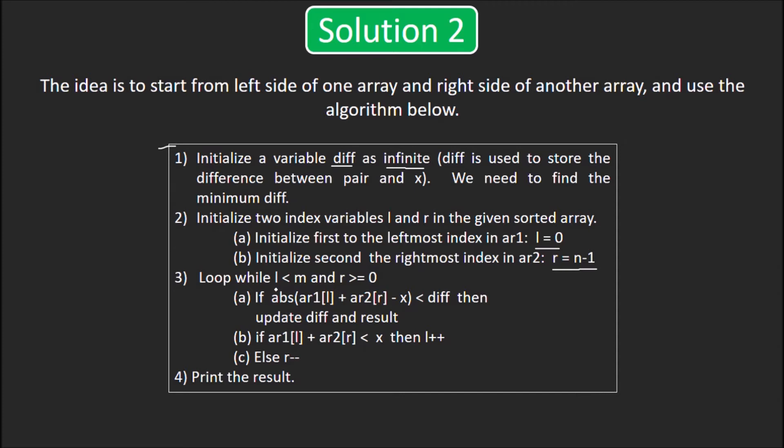Now, loop while l is less than the size of array 1 and r hasn't reached the beginning of array 2. We see if the difference between the sum of two elements and x is less than the current value of diff, then we update diff. Result stores the pair which has the sum closest to x. Basically, we need to keep storing the minimum difference in diff.